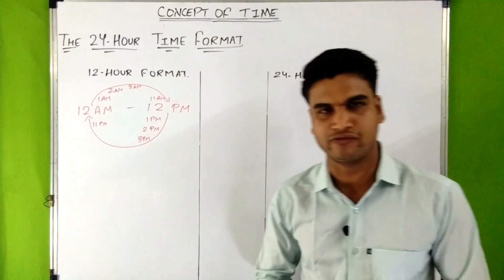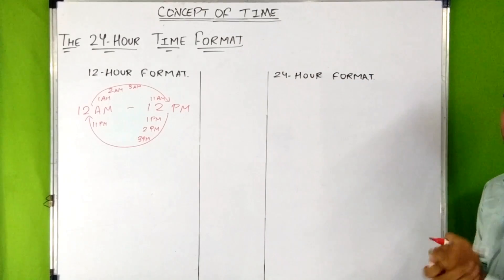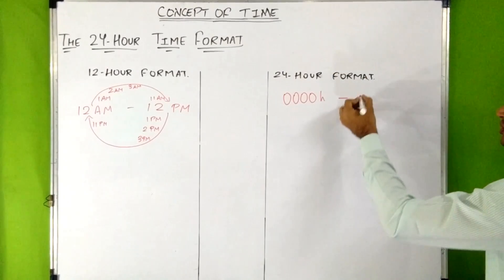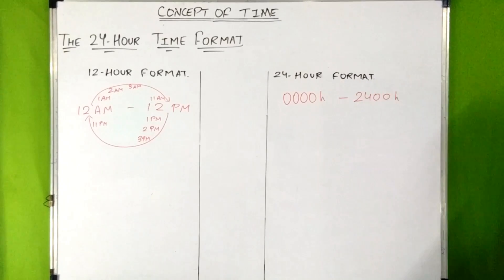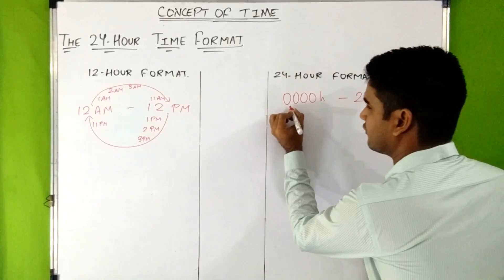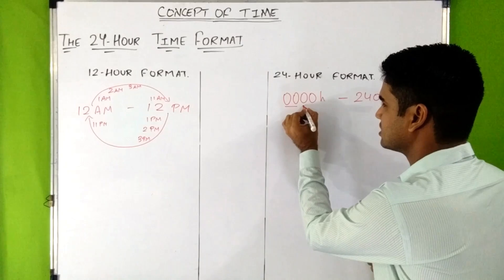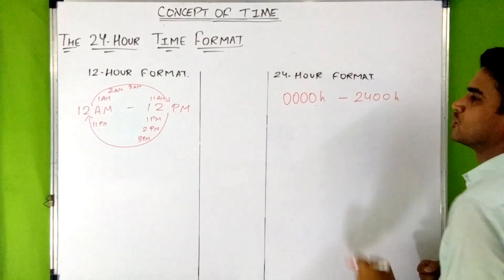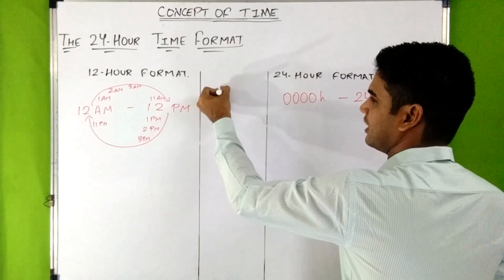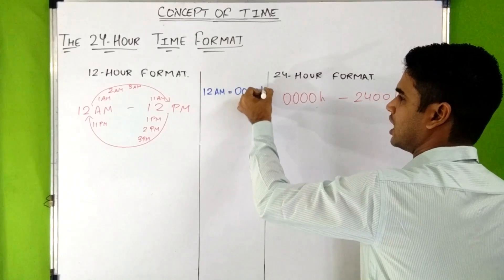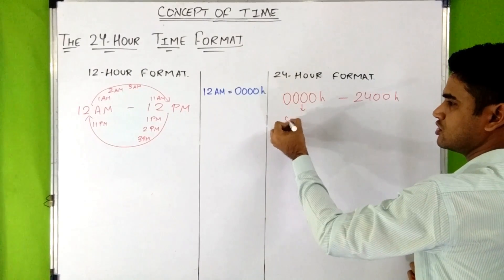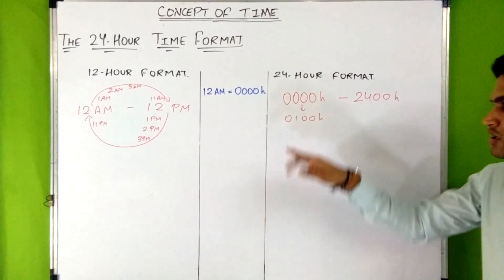Now, in the 24-hour format, the time starts from 0000 hours and ends at 2400. The first two digits tell you the hours and the last two digits tell you the minutes. So 12 AM — when a new day starts — is written as 0000 hours in 24-hour format. Then after one hour, which is 1 AM, it is written as 0100 hours.